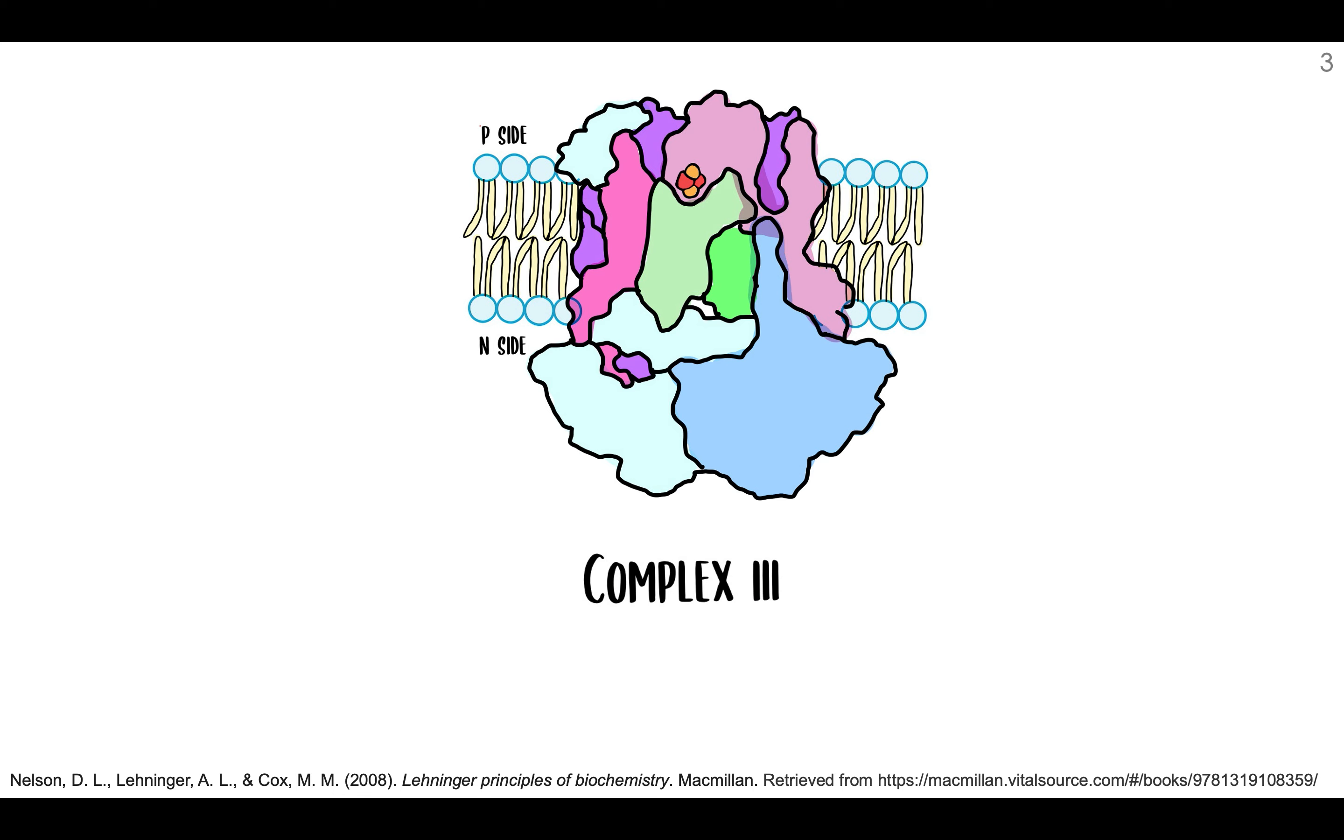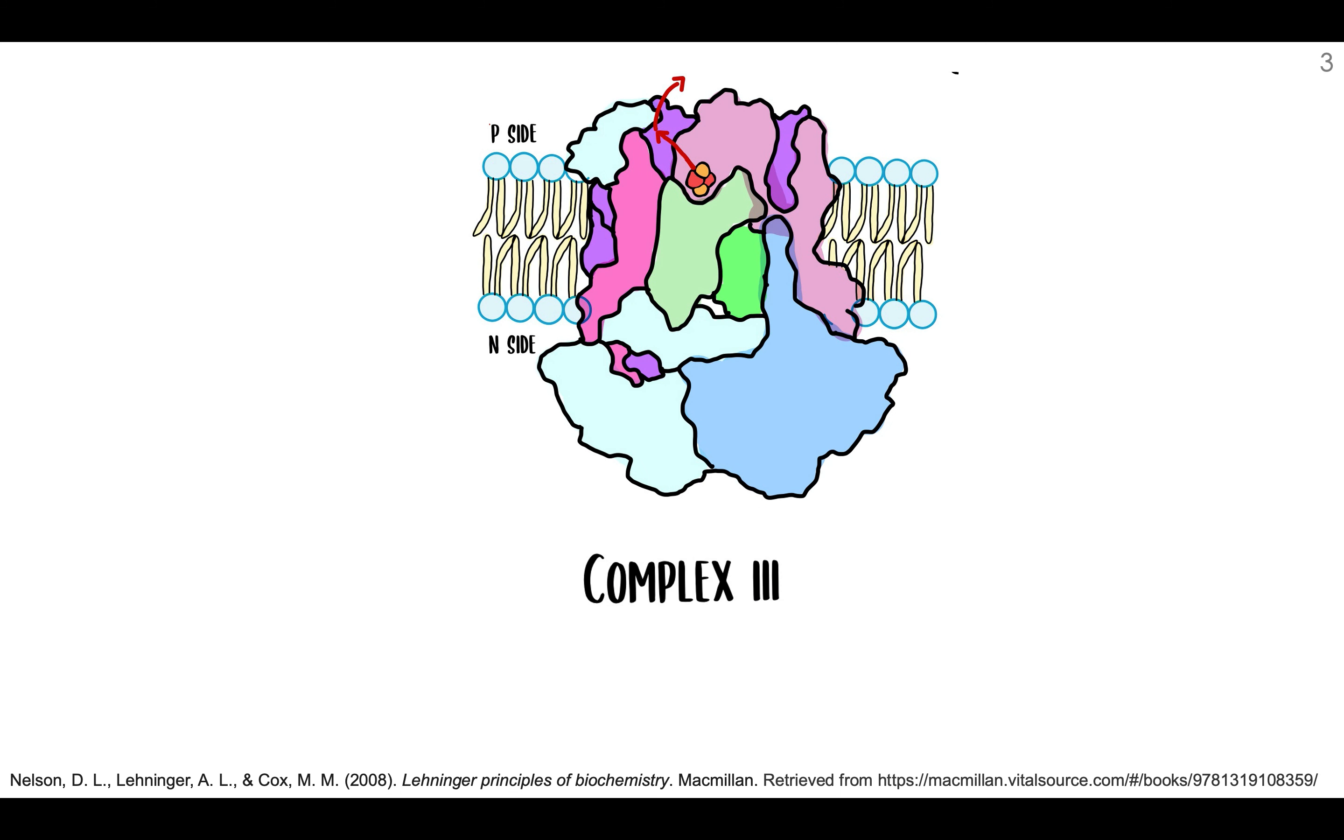So that's why the Rieske iron-sulfur protein is a little bit different, and they contain clusters of two iron atoms and two sulfur atoms. So interestingly, this Rieske iron-sulfur cluster is unique because it oscillates between two conformations, so it switches between two structures, and in one it is reduced and in the other one it is oxidized, demonstrating how special these clusters are because they have that redox active function.